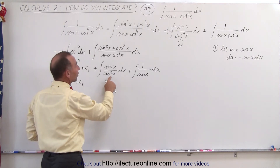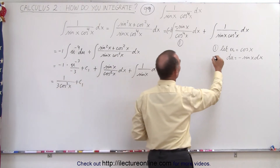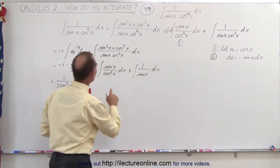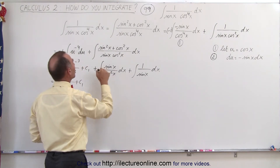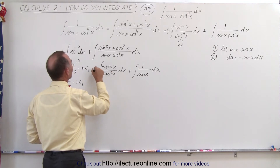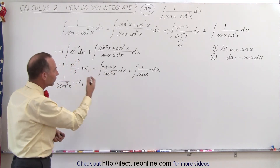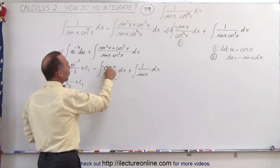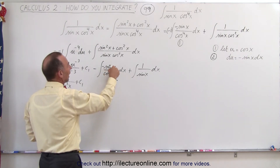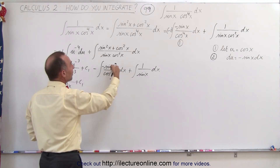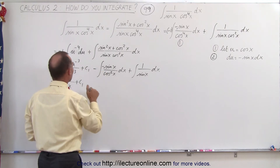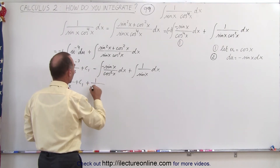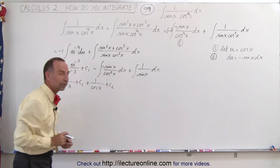The second integral we can do in a similar way. We're going to let u equal the cosine of x. Then du becomes minus sine of x dx, which means we need a negative in front here, and this also becomes negative. This becomes u to the minus two du, which when integrated gives u to the minus one. The minus one cancels the other minus one, so we end up with plus one over the cosine of x plus c2, the constant of integration.